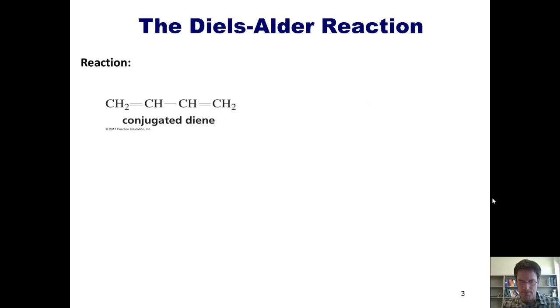To summarize, in a Diels-Alder reaction, a conjugated diene, like this one, interacts with an alkene, which we call a dienophile in a Diels-Alder reaction, to make a cyclohexene like the one shown here.